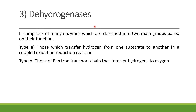The third category of enzymes are dehydrogenases, variously classified into two main groups based on function. Type A dehydrogenases transfer hydrogen from one substrate to another — this is a coupled oxidation-reduction reaction. Type B dehydrogenases are involved in the electron transport chain, finally transferring the hydrogen to oxygen. They are components of the electron transport chain.